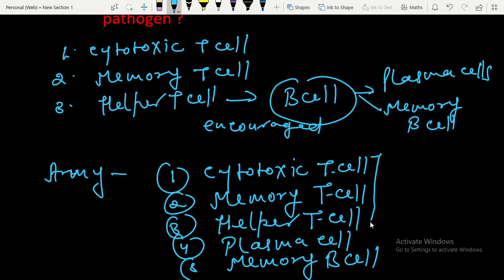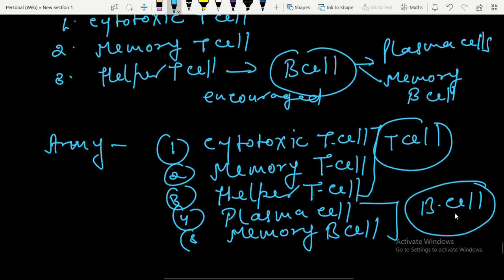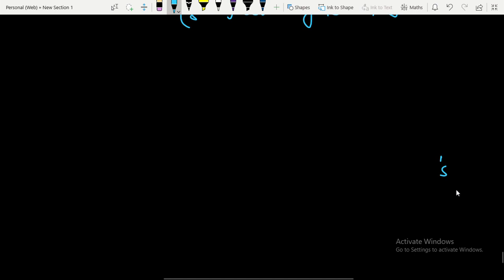These three cells are made by T-lymphocyte cells and plasma cells and memory B-cells are made by B-cells. These are made by T-cells and these are formed by B-cells. Let's see the functions of these cells in our immune system.